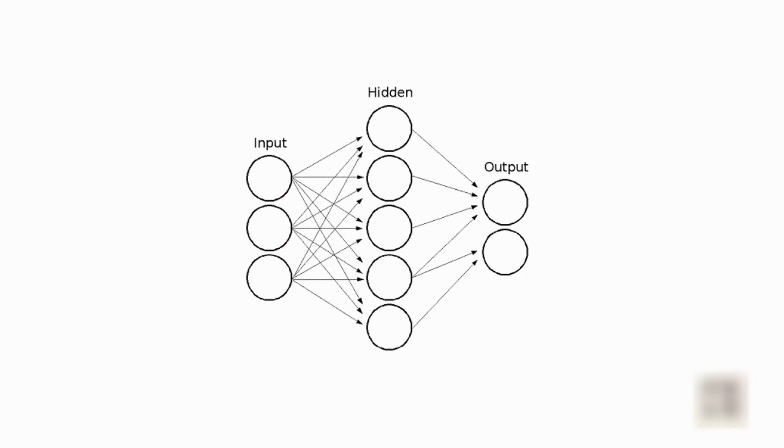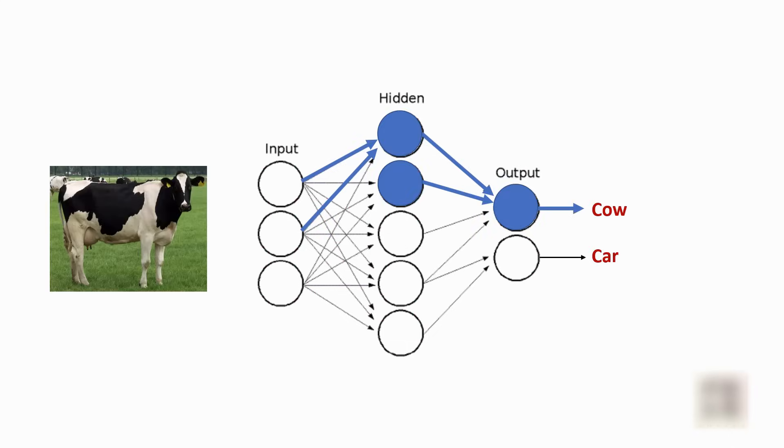So what happens is, let's say when you have a baby and the baby sees a cow for the first time, you will tell the baby that this is a cow. So internally in her brain, a specific set of neurons will light up and these two output neurons each correspond to a specific entity such as cow and a car. When you say that this is a cow, these set of neurons are lighting up and the edges they become stronger.